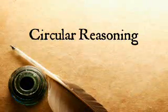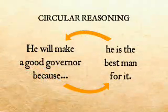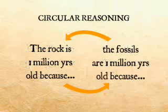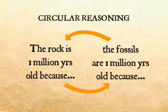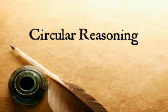Circular reasoning is a sophism where one of the premises in a syllogism already claims or assumes the conclusion is true. For example, he will make a good governor because he is the best man for it. Or, we know the rock is one million years old because we know the fossils that are in the rock are one million years old. This is circular reasoning. The conclusion cannot be used to prove the syllogism. A true syllogism will come to a correct conclusion.